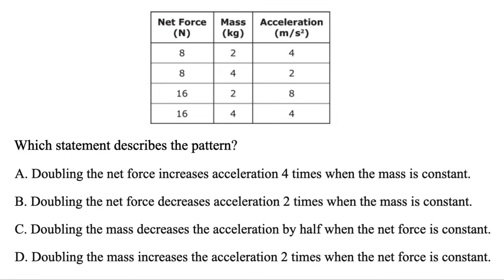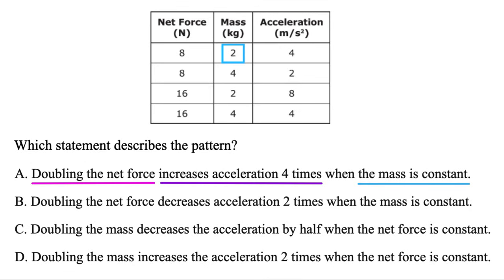Which statement describes the pattern here? Just take your time, go one by one. The first option: doubling the net force increases acceleration four times when the mass is constant. With these, try to find whatever is constant first — the mass. We go from 8 to 16 for net force, so that checks out for doubling. But do we increase acceleration four times? We go from 4 to 8 — we add by 4 but we don't multiply by 4, because that would become 16. So A is not true.